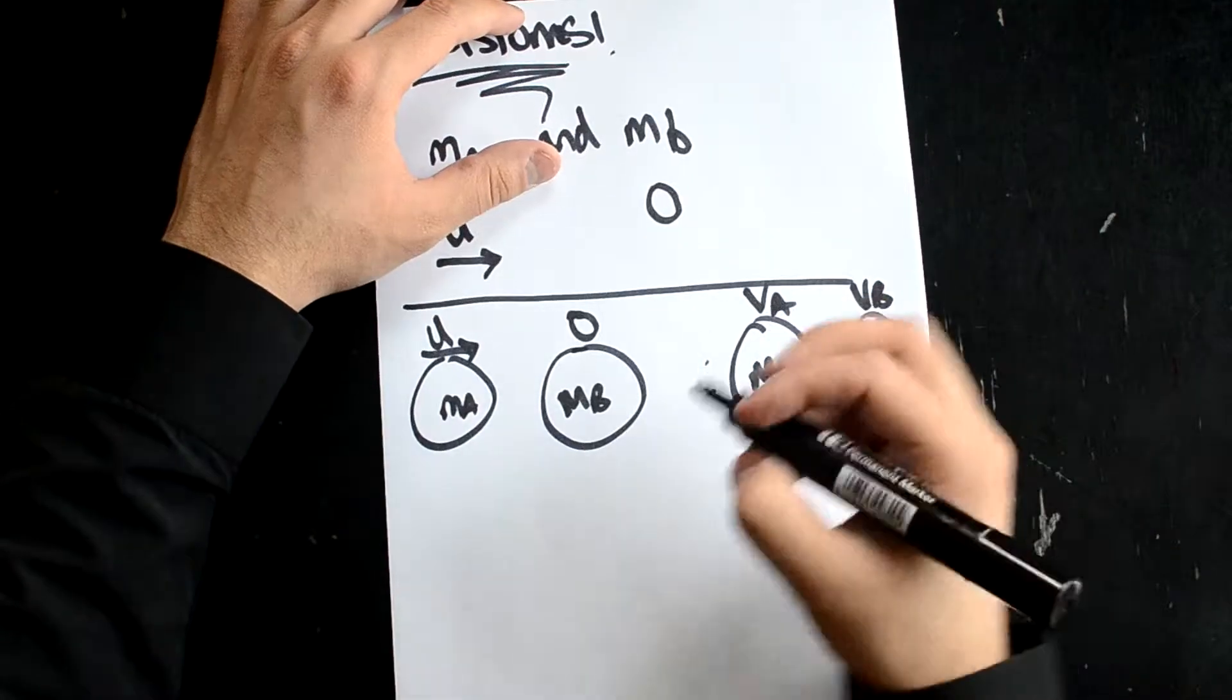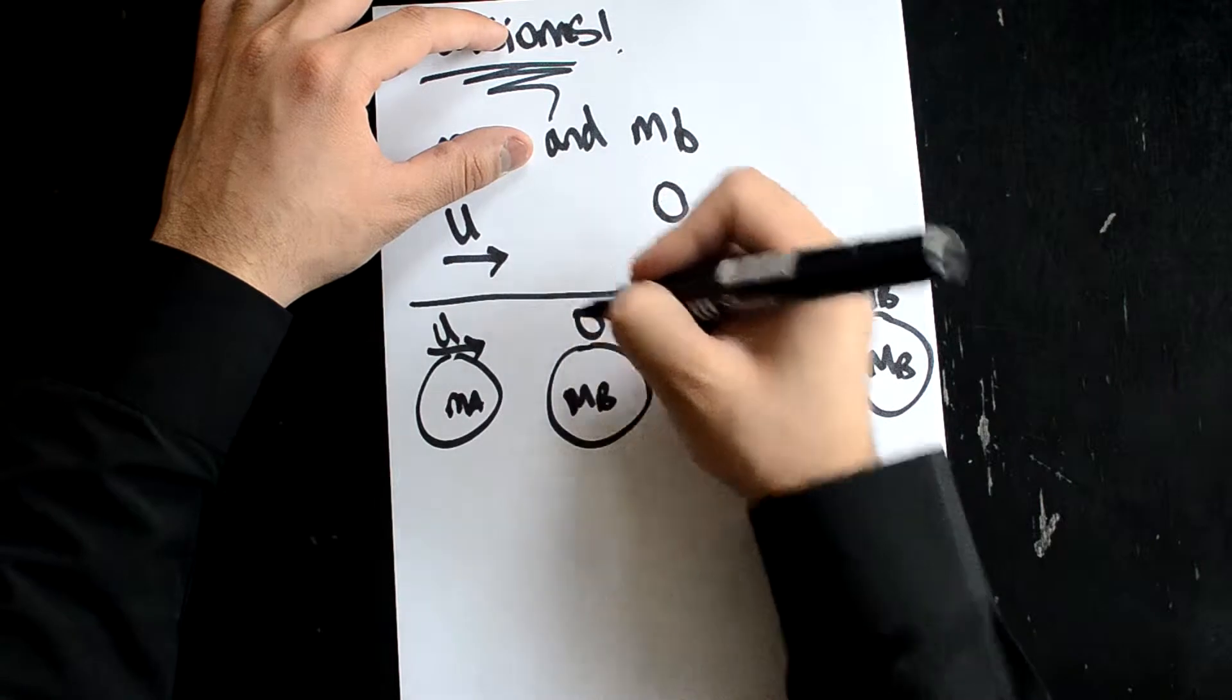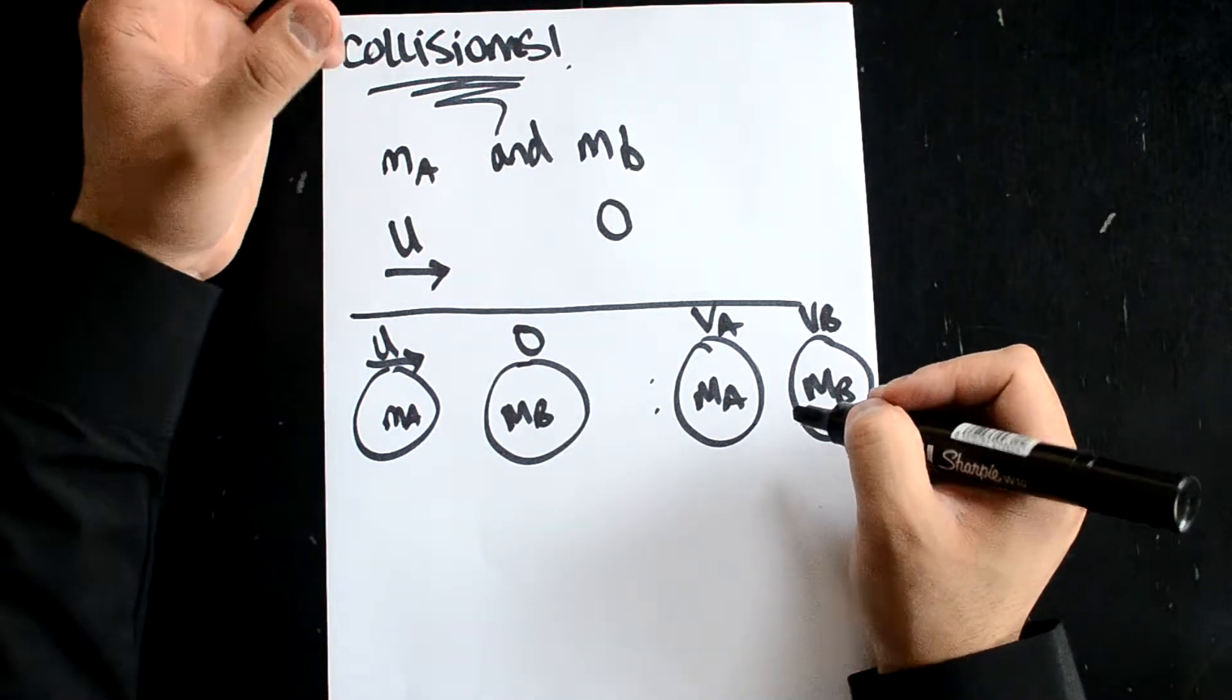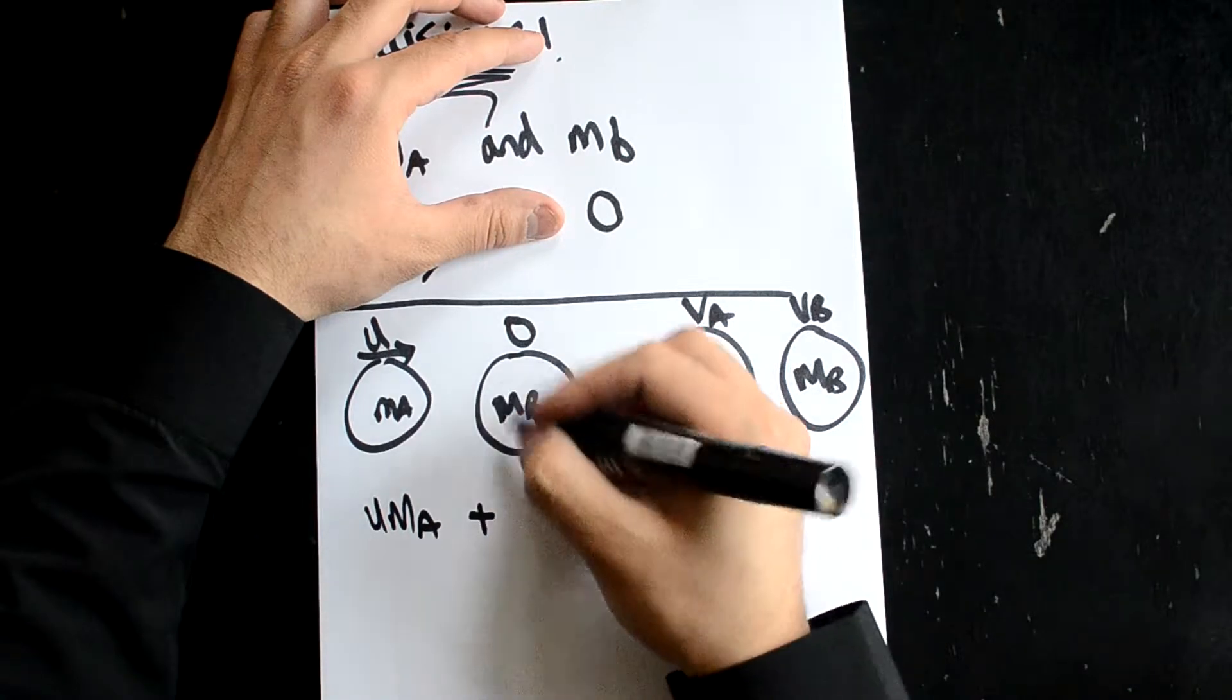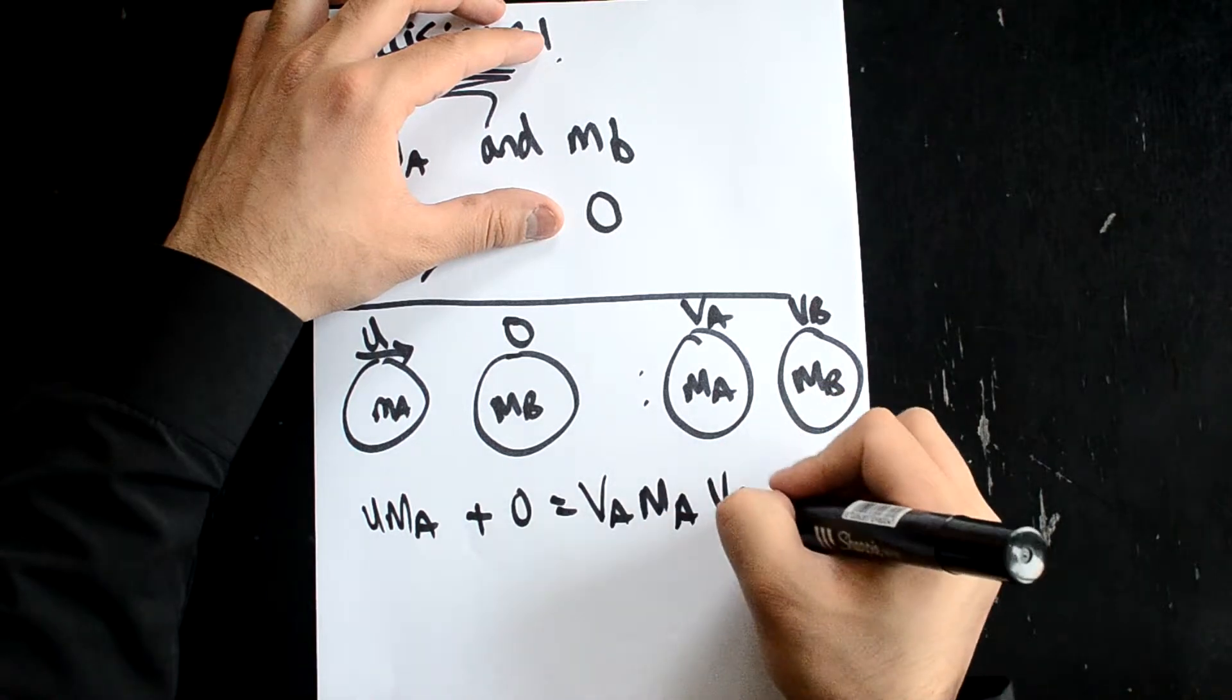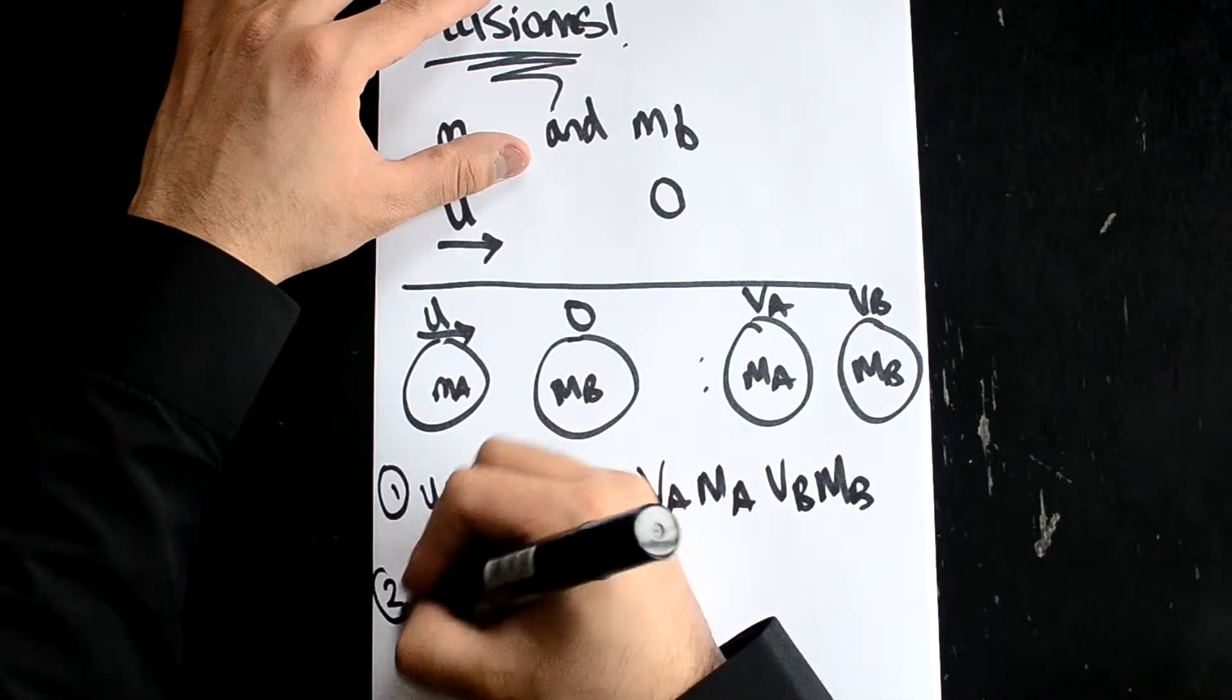The first thing we do - the reason I put this like this, it's simple: velocity times mass plus velocity times mass equals velocity times mass plus velocity times mass, which is the conservation of momentum. So here we get ma u plus zero equals va ma plus vb mb. That's one equation.